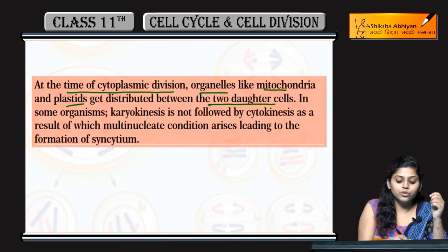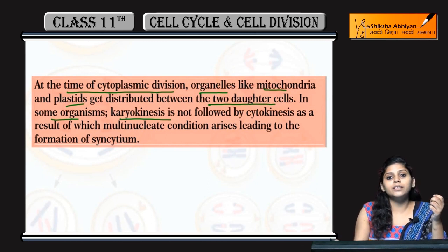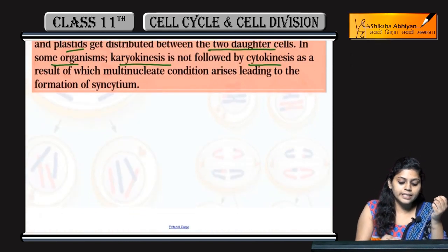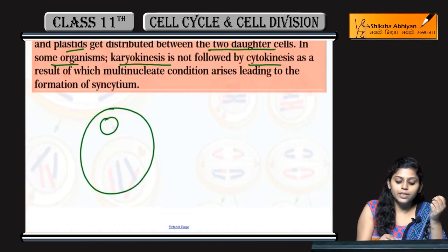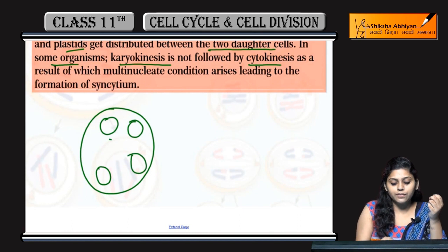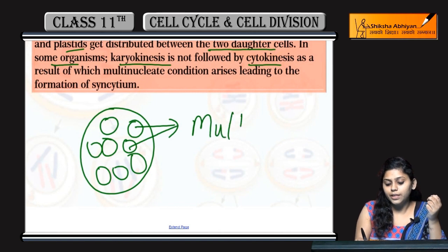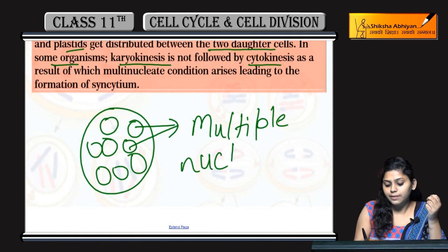There are some organisms where cytokinesis does not follow nuclear division. That means in some cells, nuclear division occurs but cytoplasmic division does not. In these cases, a multinucleate condition is present, where multiple nuclei are found in a single cell.